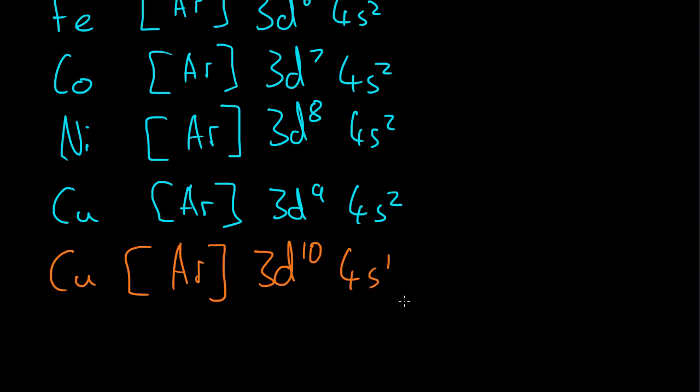So then the 4s orbital is filled again for zinc, and then from gallium to krypton, the 4p sublevel gets filled up in the normal way, much like the 3p sublevel and the 2p sublevel. So that is the main trouble that people have when it comes to these energy levels, this little exception with copper and chromium. So that usually does come up in exams. You do need to know that.